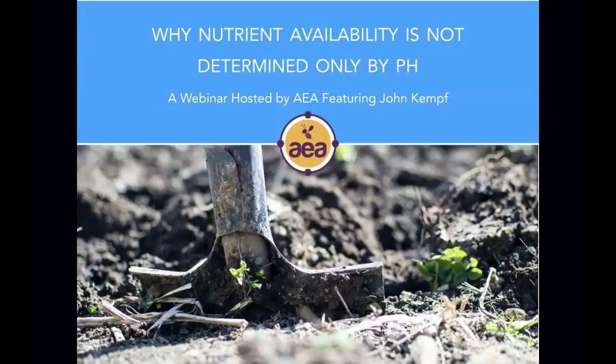Nutrient availability is ultimately determined by biological activity. As long as we approach nutrient availability from a chemistry perspective, we'll be able to produce crops at a certain level of health and vitality, but we will always hit the ceiling — the threshold between level two and level three in the plant health pyramid. We can't really get to level three until we have really active soil biology. That's the conclusion of the slide deck, and I'm now going to open it up for Q&A.